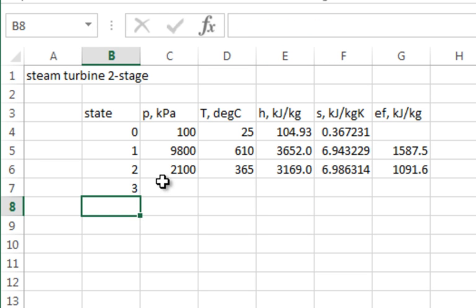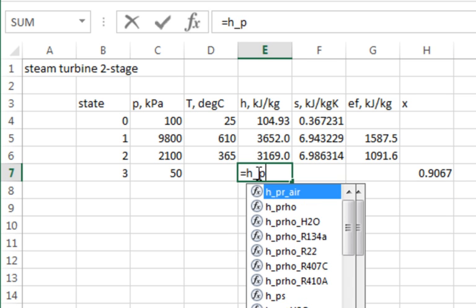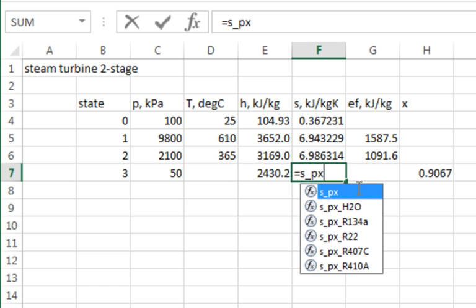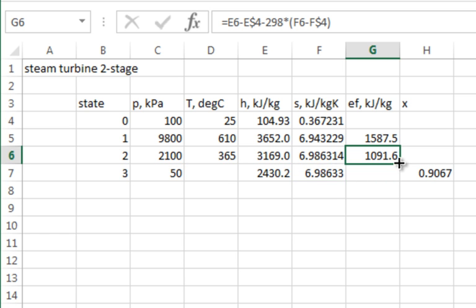How about for state 3? State 3, we had a pressure given of 50 kilopascal and a quality. Well, I could put the quality way over here, X as a new column. The quality is 0.9067. So now I need to say I want enthalpy as a function of pressure and quality for steam. And then you feed it the pressure, and you feed it the quality, and there you go. We'll clean that up a little bit. And the same thing with entropy as a function of pressure and quality for steam. Pressure and quality. And then I'll just drag down the formula for the flow exergy. And did that help reproduce the table?